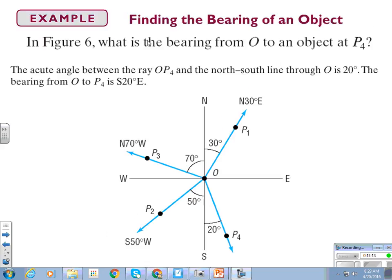When we're looking at the bearing of P4, he is south 20 degrees east. The vertical direction goes first, the horizontal direction goes second, and then the angle from the north-south line goes in between.